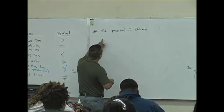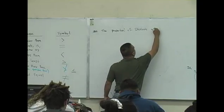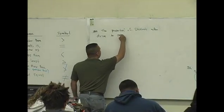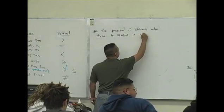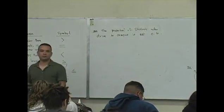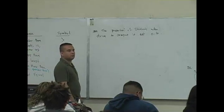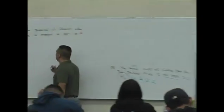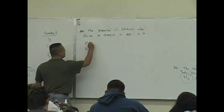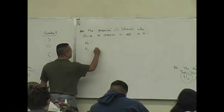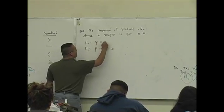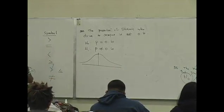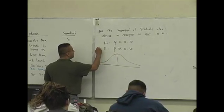So the portion of students who drive to campus is not 0.6. So we already did this hypothesis. In your setup, we have two types. This was an alternate hypothesis, so P is not equal to 0.6. The null is P equals 0.6. So because this is a 'not equal' for the alternate hypothesis, this is a two-tailed test.